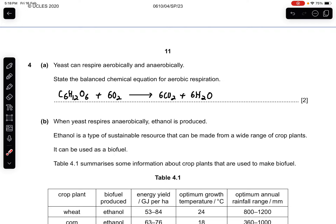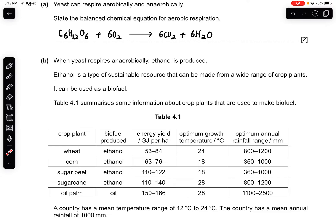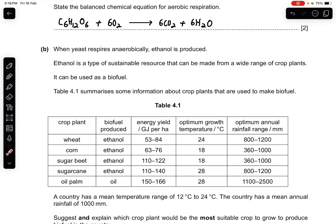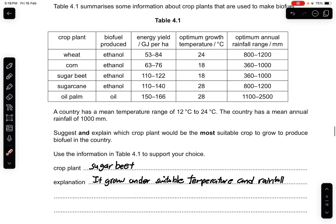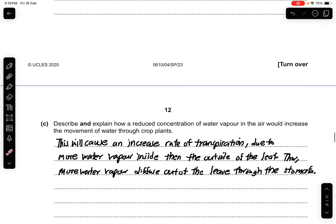Question 4a: yeast can respire aerobically and anaerobically. State the balanced chemical equation for aerobic respiration. Part B: when yeast respires anaerobically, ethanol is produced. Ethanol is a type of sustainable resource that can be made from a wide range of crop plants and used as biofuel. Table 4.1 summarizes information about crop plants useful for making biofuels. A country has a mean temperature range of 12 to 24 degrees and a mean annual rainfall of 1000 mm. The most suitable crop is sugar beet, because its rainfall requirement is 800 to 1200 mm and its optimum growth temperature is around 18 degrees, fitting the country's conditions.